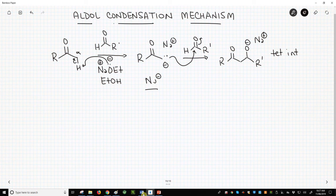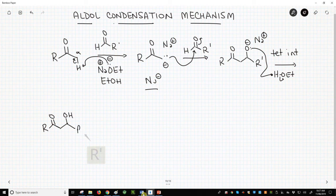In the aldol reaction, the intermediate needed to wait for a proton source. Not so in the condensation. We have a proton source immediately available. It's the conjugate acid of our weak base, ethanol in this case. This forms our beta-hydroxyketone.